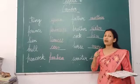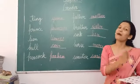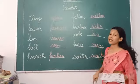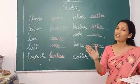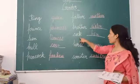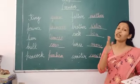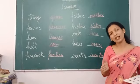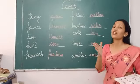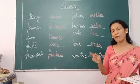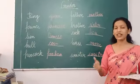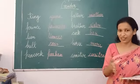Brother is male so it is masculine gender. Sister is female so it is feminine gender. Cock is male so it is masculine gender, and hen is female so it is feminine gender. Horse is male so it is masculine gender.